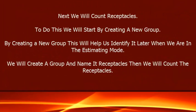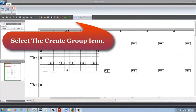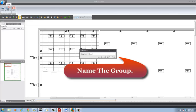Next, we will count receptacles. To do this, we will start by creating a new group. By creating a new group, this will help us identify it later when we are in the estimating mode. We will create a group and name it Receptacles, then we will count the receptacles. Select the Create Group icon and name the group.